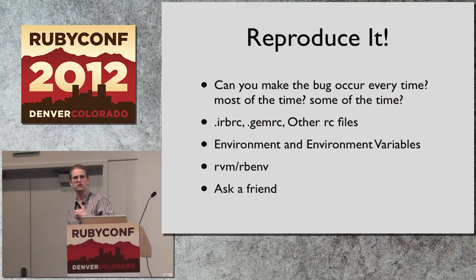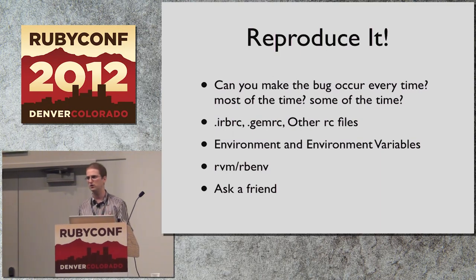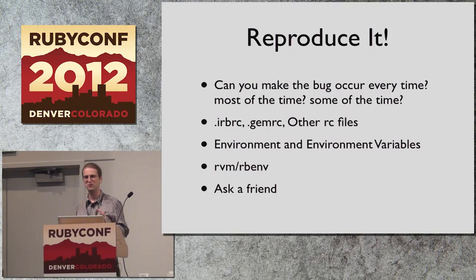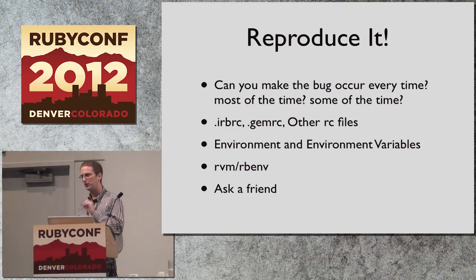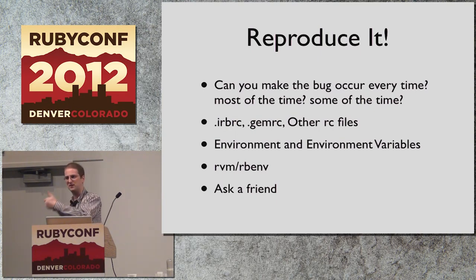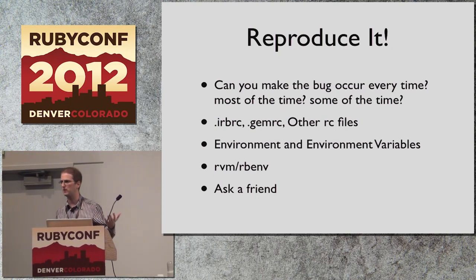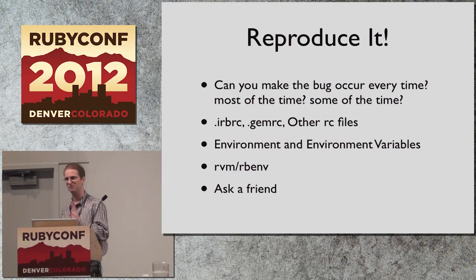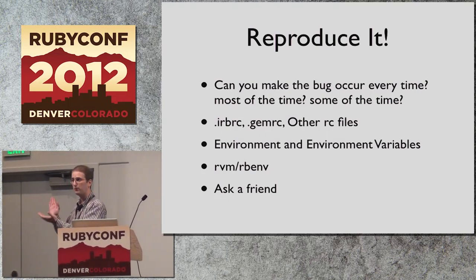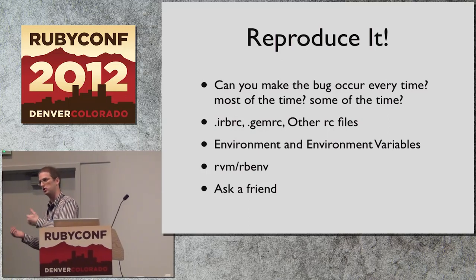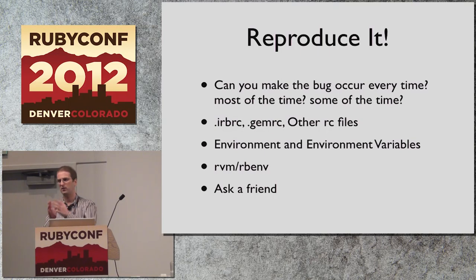This is an often overlooked step in reporting bugs, but the first thing you need to do if you think you've found a bug is make sure you found a bug. A bug that happens once is not a bug you can really go about fixing. Run the code again and see if it crashes — can you make it occur every time? Not every bug is 100% reproducible; once you get into things like threading and memory allocation, maybe it's only 60% or 50%. But it should be more than zero. If you can't reproduce it, you're not going to be able to fix it.